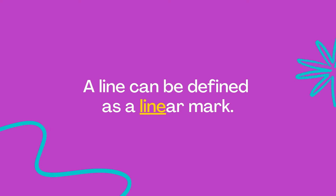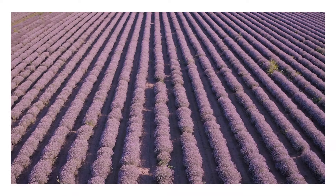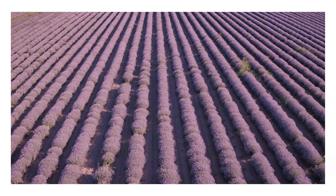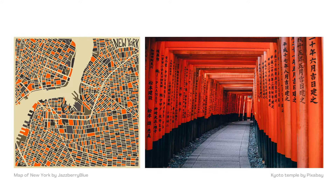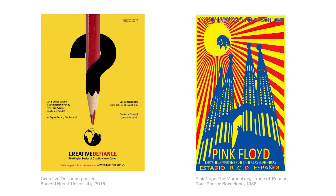A line can be defined as a linear mark. It might be wavy to create a sense of movement, or maybe it's straight, which would look pretty neat. Lines are everywhere, even in the word line itself. We can place lines strategically to lead eyes toward a focal point, directing the focus towards a particular design element. We call these leading lines, and they control the way viewers look at our entire design.